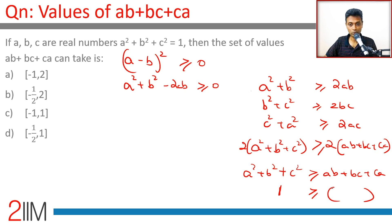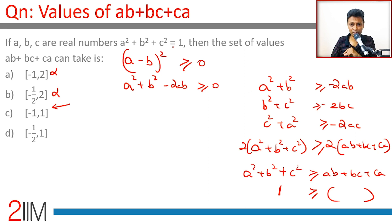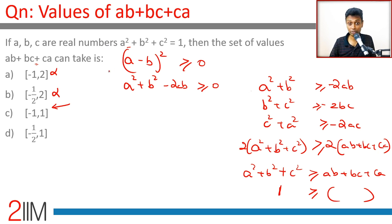So the maximum of ab + bc + ca is 1. Now, if we put a = b = c, this expression will equal 1 and the maximum is attained. However, if a = b = c, we can never go negative. Only if one of the terms is negative can we get a negative value.